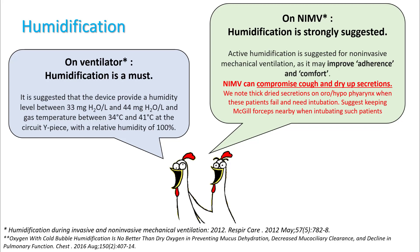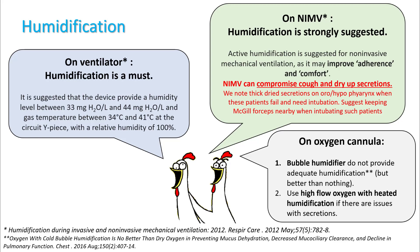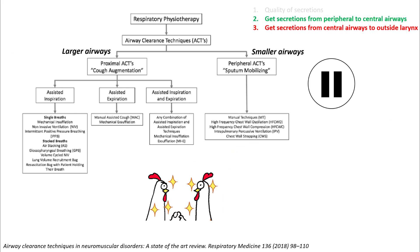Understand that non-invasive ventilation can compromise cough and dry up secretions pretty fast. While intubating a patient who has been on non-invasive, make sure that you have Magill forceps nearby, as secretions can dry up and are very difficult to suction. While on oxygen cannula, bubble humidifiers do not provide adequate humidification but are certainly better than nothing. If you really need good humidification, use heated humidification if there are issues with secretions.